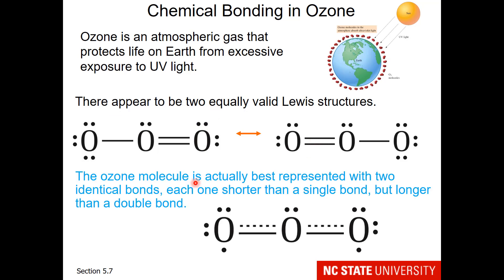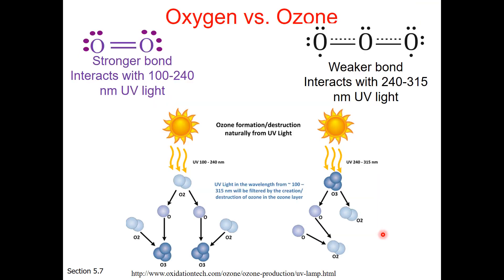So the ozone molecule is best represented with two identical bonds, each one shorter than the single bond, but longer than the double bond. So it's the same idea that this double bond's probability region is spread among three atoms. Now, why is that important? Both molecules have the ability to protect us from ultraviolet light here on the surface of the earth. The O2 molecule has a very strong bond, which, when it comes into contact with ultraviolet light, actually splits and makes ozone.